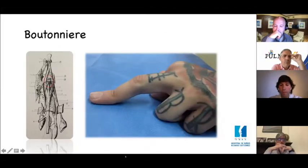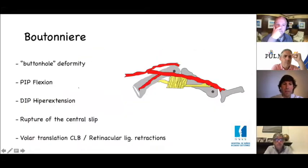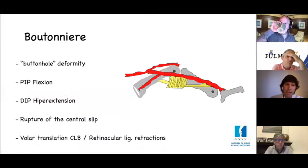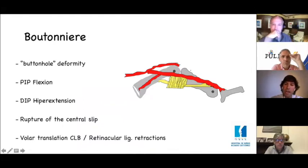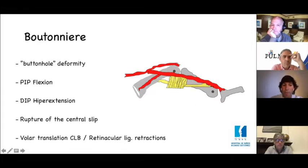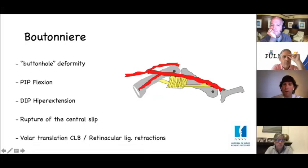Now we go to the topic: boutonniere deformity. This is a buttonhole deformity with flexion at the PIP and hyperextension at the DIP, due to rupture or elongation of the central slip at the base of P2. The progression tends toward palmar translation of the conjoined lateral bands relative to the axis of rotation of the PIP, with retraction of the retinacular ligaments, especially the transverse and oblique retinacular ligaments.